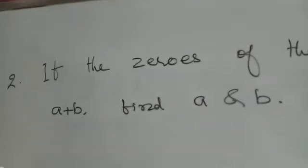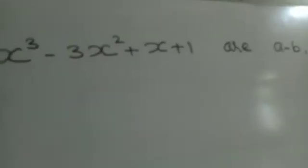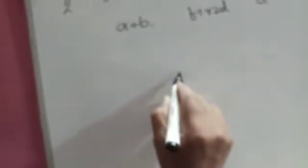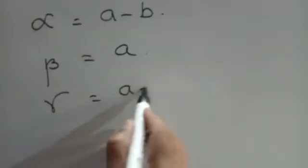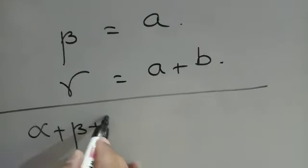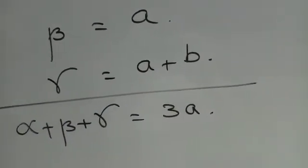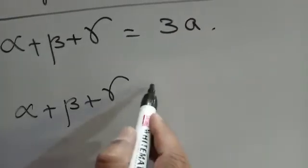Now for the second question: if the zeros of the polynomial x³ - 3x² + x + 1 are (a - b), a, and (a + b), find a and b. This is a cubic polynomial with three zeros. We are given the zeros rather than asked to find them — we need to find the values of a and b. Taking the three zeros as α = a - b, β = a, and γ = a + b, adding them gives α + β + γ = 3a, which represents the sum of the zeros.